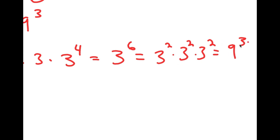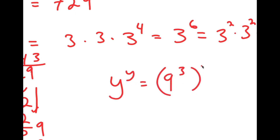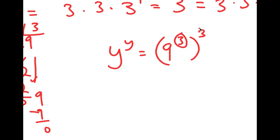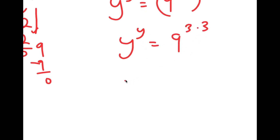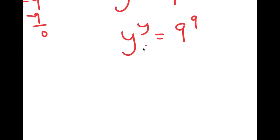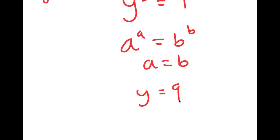So I'm going to replace 729 to the power of 3 with 9 to the power of 3 to the power of 3. And the reason I did this is because 9 to the power of 3 to the power of 3 is the same thing as 9 to the power of 3 times 3, and 3 times 3 is 9. So I get y to the power of y is equal to 9 to the power of 9. Now I can use the property: if a to the power of a equals b to the power of b, this means a equals b. So in this case, y is equal to 9.